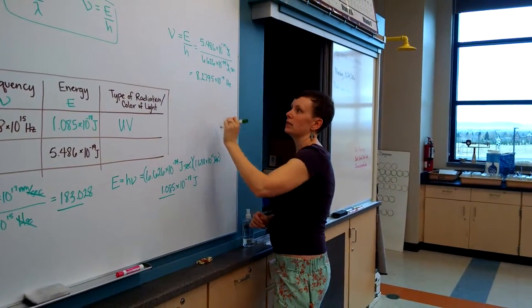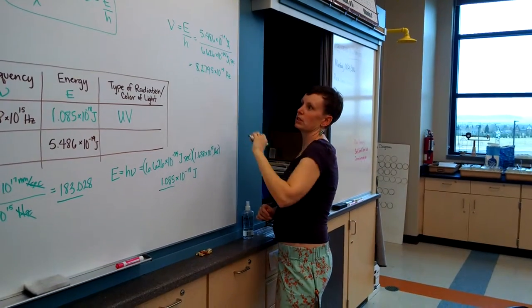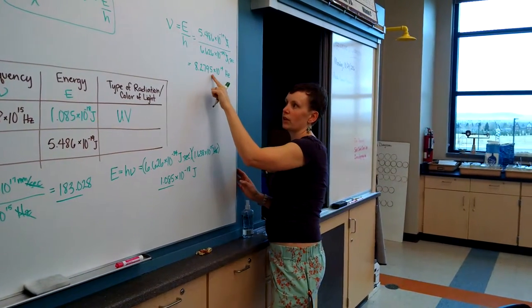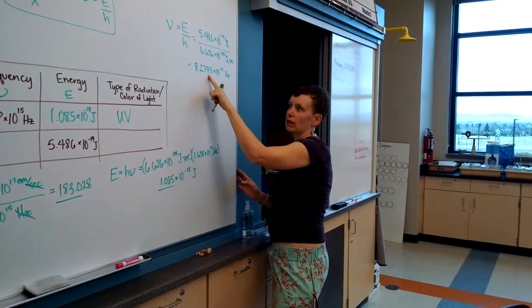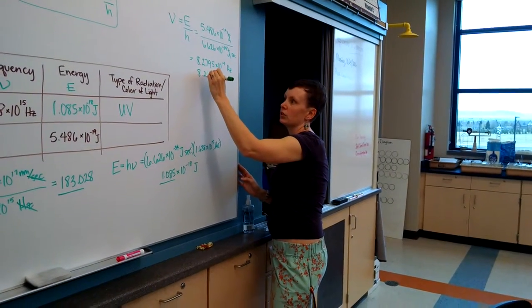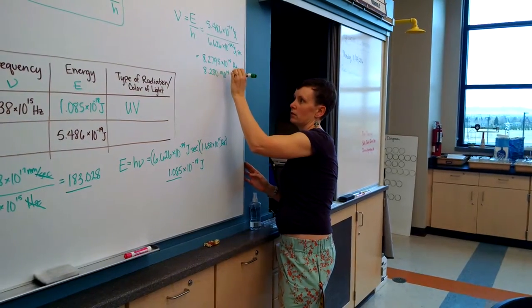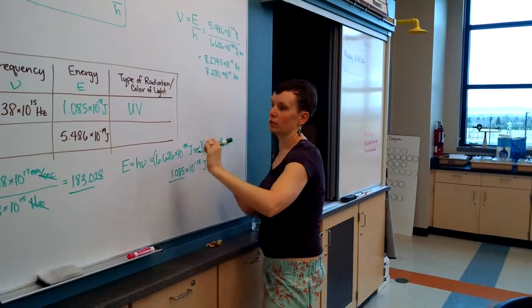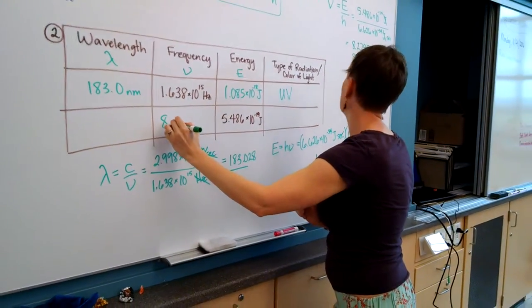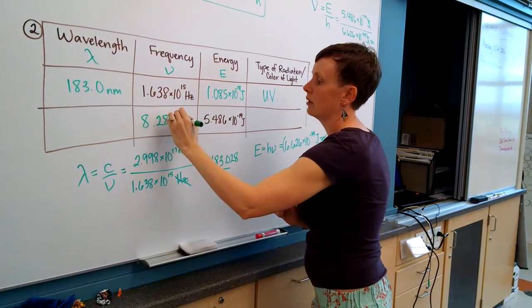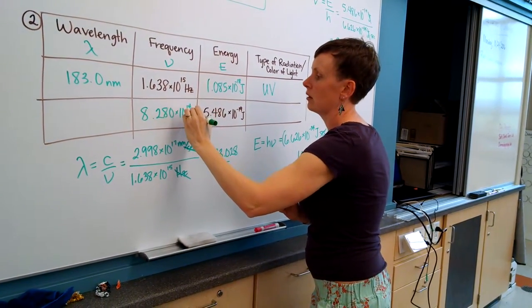Now for sig figs, 4 sig figs, 4 sig figs. This whole worksheet has 4 sig figs. The 5 will round the 9 up, so we're going to end up with 8.280 times 10 to the 14th hertz. And we'll record that over here, 8.280 times 10 to the 14th hertz.